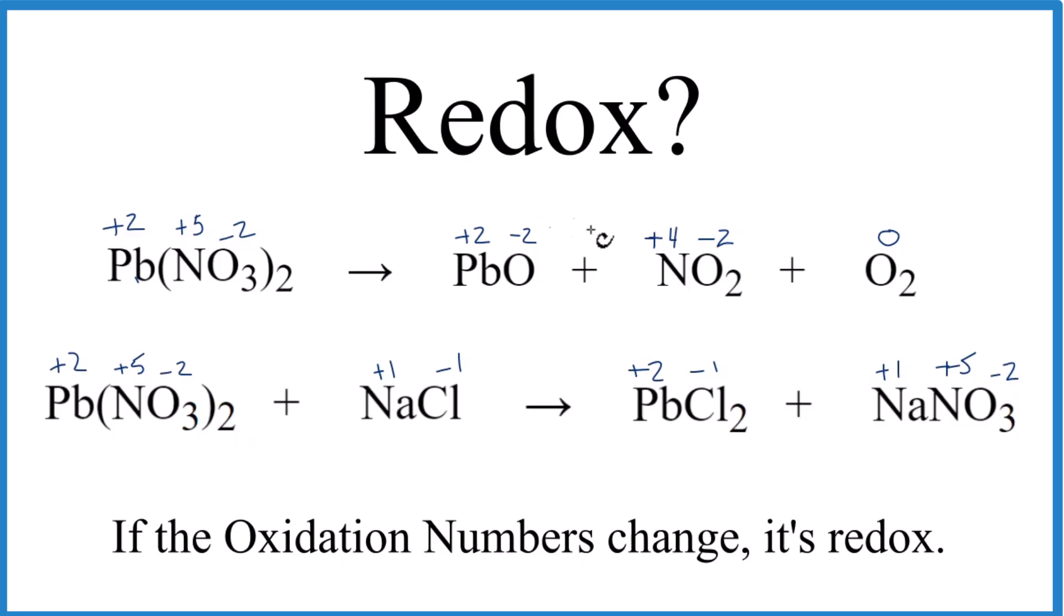So for the first reaction, lead is plus 2, nitrogen is plus 5. Over here, it's plus 4. That's changing. Oxygen, we have a negative 2. It's negative 2 here, but we have a zero over here. So this is going to have to be a redox reaction because the oxidation numbers on the nitrogen and this oxygen here, they change.